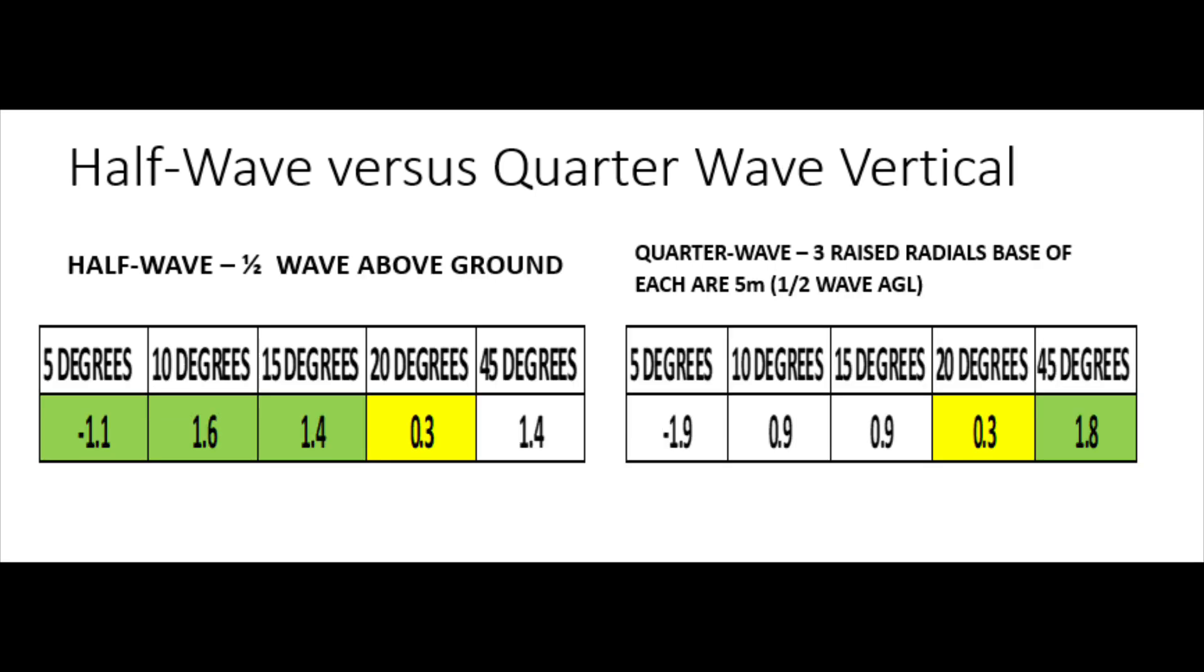Again, don't forget now, we're 5 meters off the deck for the half wave in terms of the feed point, and those raised radials with the quarter wave, the lowest point of them are also 5 meters off the ground. So they're both half wave above ground level. And again, at 5 and 10 degrees off the horizon, we've got about 0.7, 0.8 of a dB difference in favor of the half wave. At 15 degrees, then there's a bit more of an advantage for the half wave, still only half a dB.